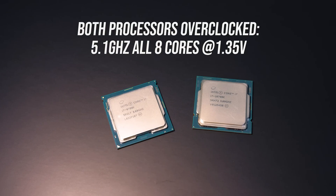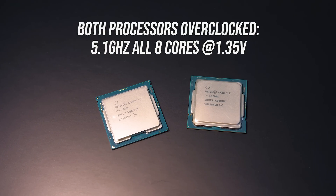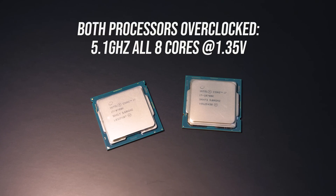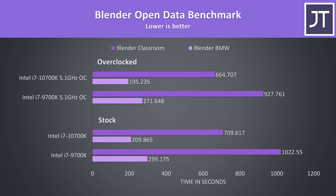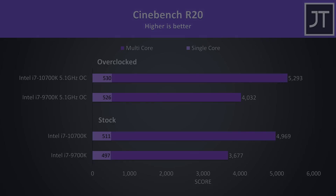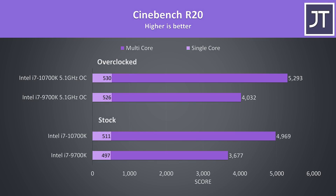I've also done some tests with both processors overclocked to 5.1GHz on all 8 cores at 1.35V. These are the results in Blender with stock results at the bottom and overclocked results above — overclocking can save a few minutes in this task. Likewise in Cinebench, we can see the improvement to single core performance, though the 10700K was still scoring better there despite both running solid at 5.1GHz.